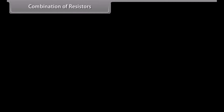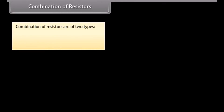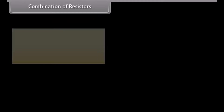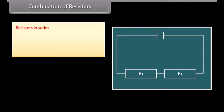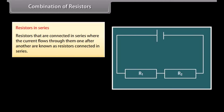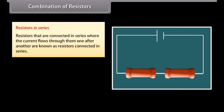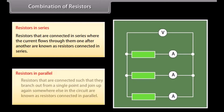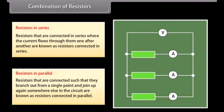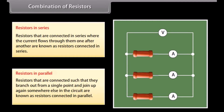Combinations of resistors are of two types: resistors in series and resistors in parallel. Resistors in series: resistors connected in series are those where the current flows through them one after another. Here, the current depends on the applied voltage, the number of components, and the nature of components in the circuit.